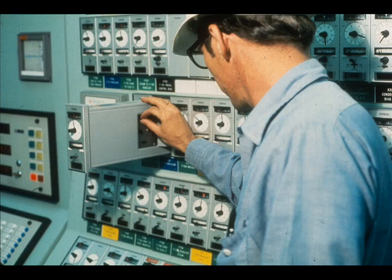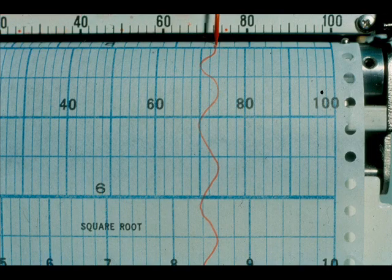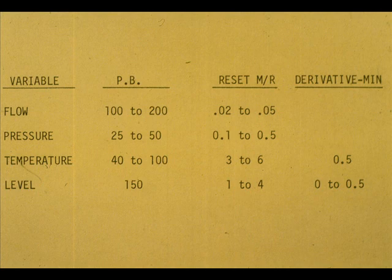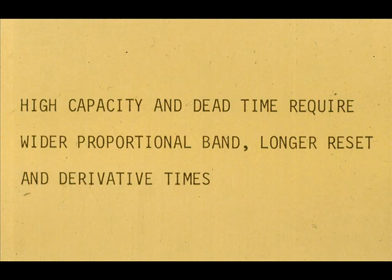Now for a few practical suggestions in regard to tuning. If the process cycles while on manual control, don't try to tune it — the external disturbance must be eliminated. A majority of control loops pose no special problem for tuning. Ballpark settings for different variables are shown here, and final adjustments can be made as time allows; a similar guide is in the workbook materials. A judgment has to be made concerning the system capacity for level, temperature, and some pressures. High capacity and dead time require wider proportional band, longer reset, and derivative times.